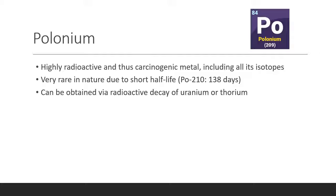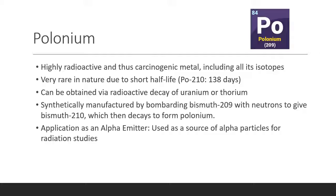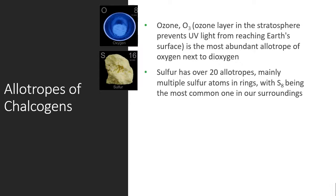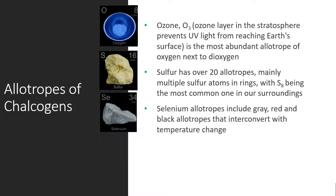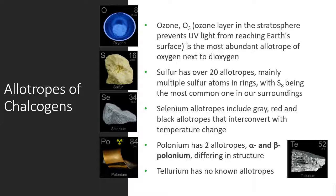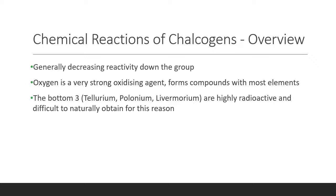Polonium is highly radioactive and carcinogenic, as polonium-210 has a half-life of 138 days. It can be synthetically manufactured by bombarding bismuth-209 with neutrons to give bismuth-210, which then decays to form polonium. It is also used as an alpha emitter, a source of alpha particles for radiation studies. Oxygen's only other known allotrope is ozone. However, sulfur has over 30 different allotropes. Selenium has three allotropes: gray, red, and black. Polonium has alpha and beta allotropes, and tellurium has no known allotropes. Reactivity generally decreases down the group, though the heavier elements have increased radioactivity and are not very common in nature.